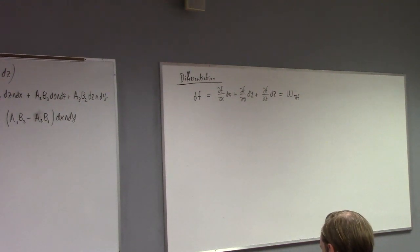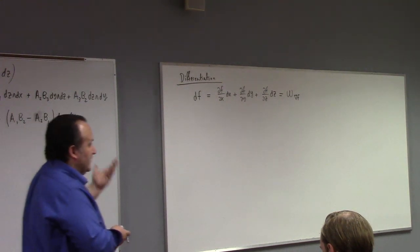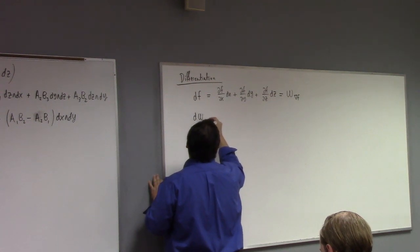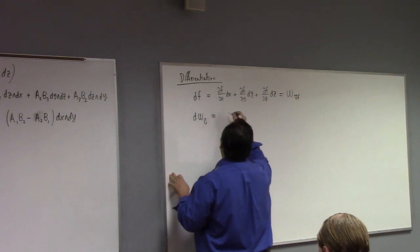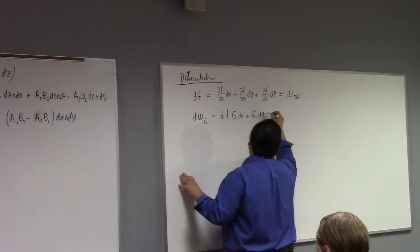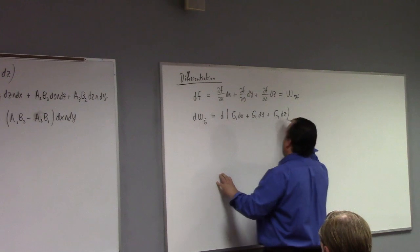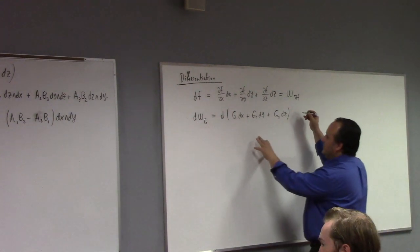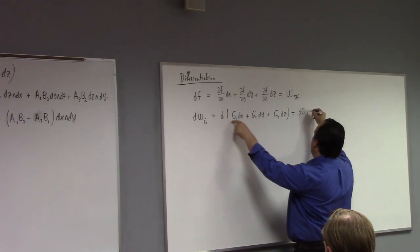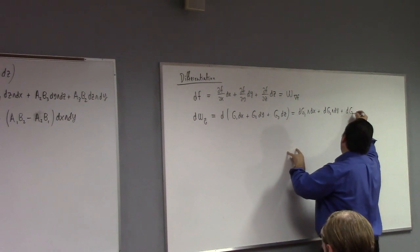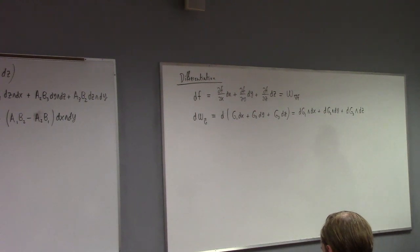If we take the exterior derivative of a one form — say g1 dx plus g2 dy plus g3 dz — I haven't defined this yet, but I'll define it now. How do you take the exterior derivative of a one form? The definition is very simple: you take the differential of the components and wedge it with the corresponding differential. So that's dg1 wedge dx, plus dg2 wedge dy, plus dg3 wedge dz.